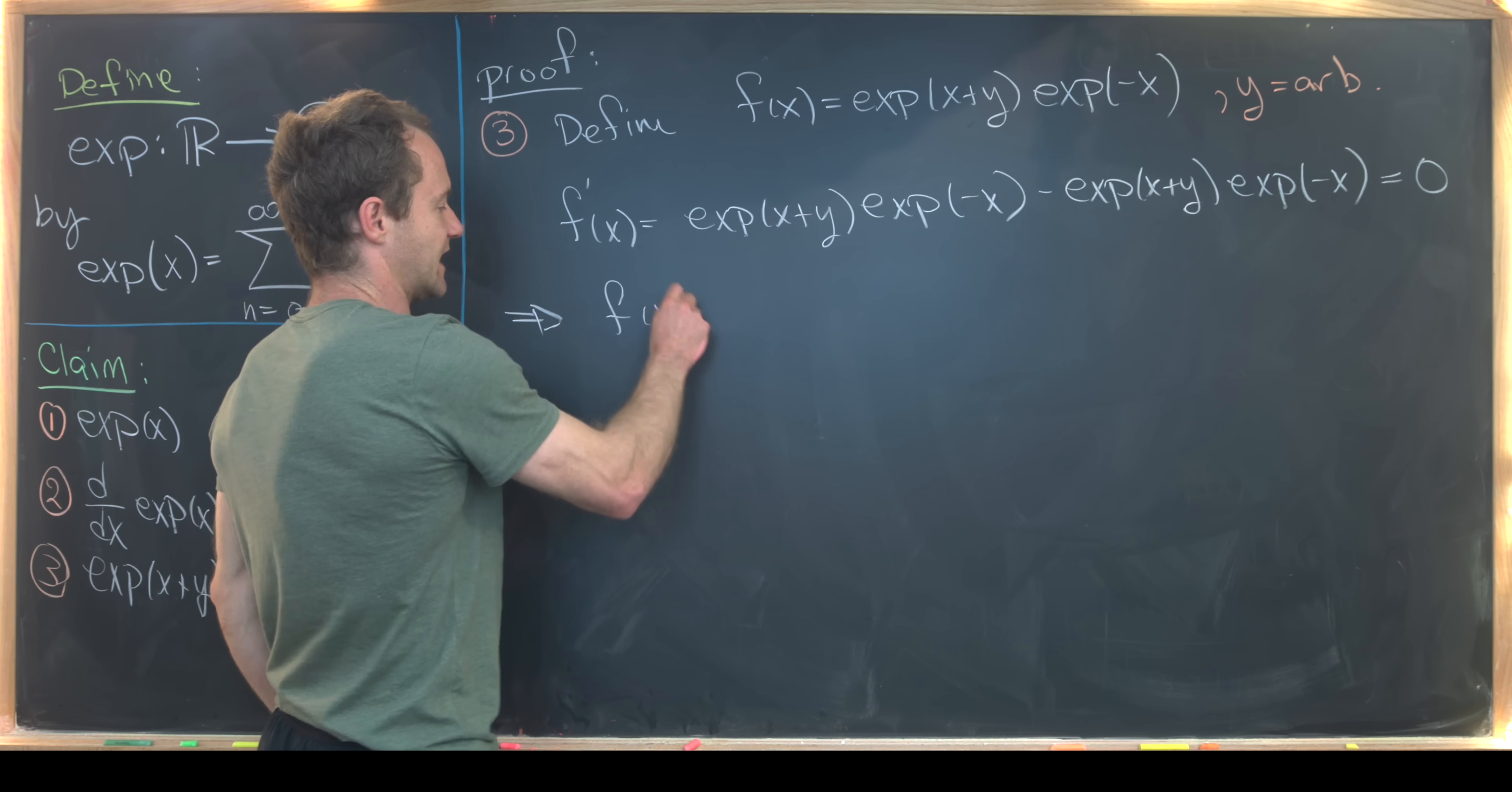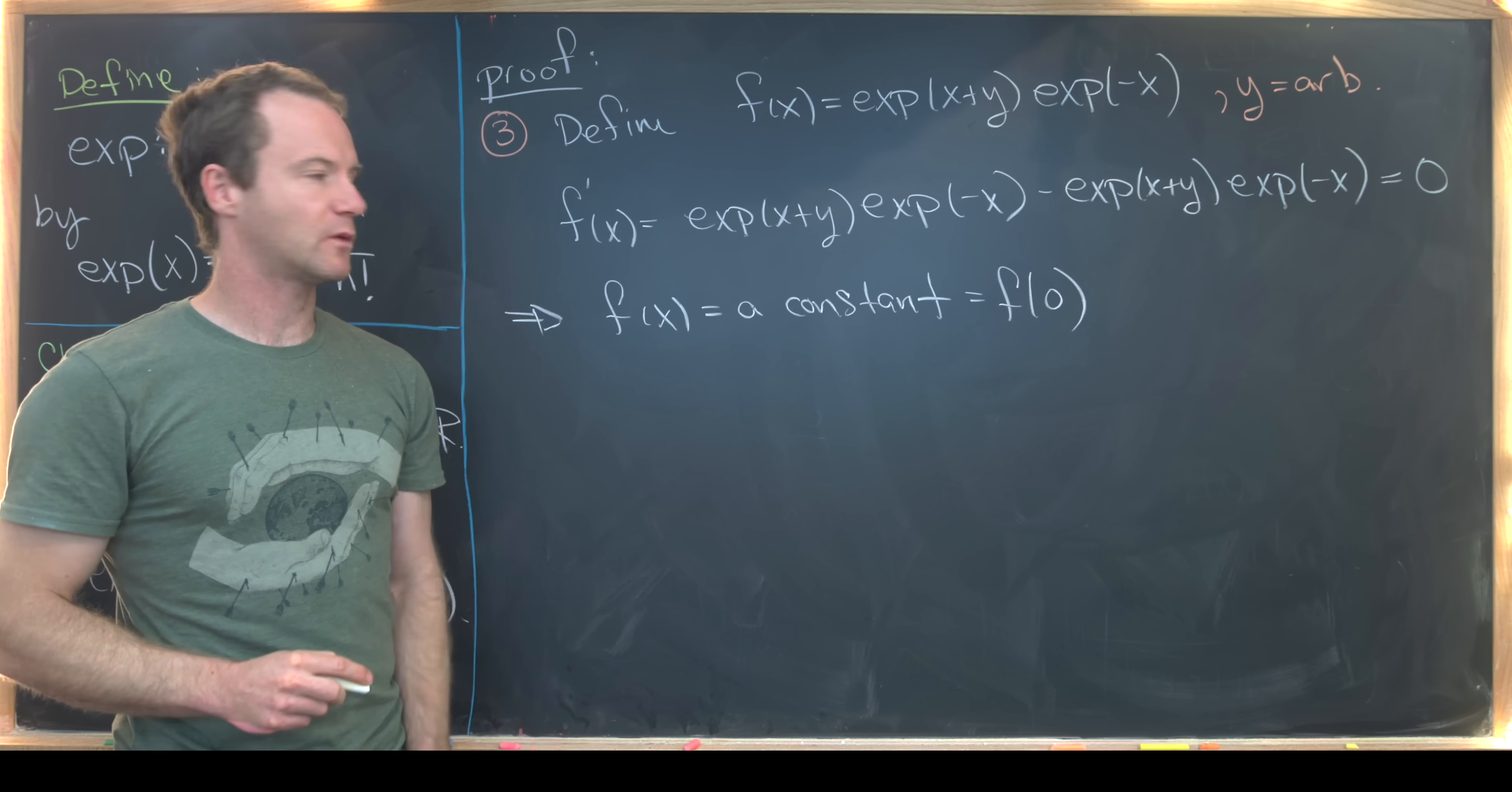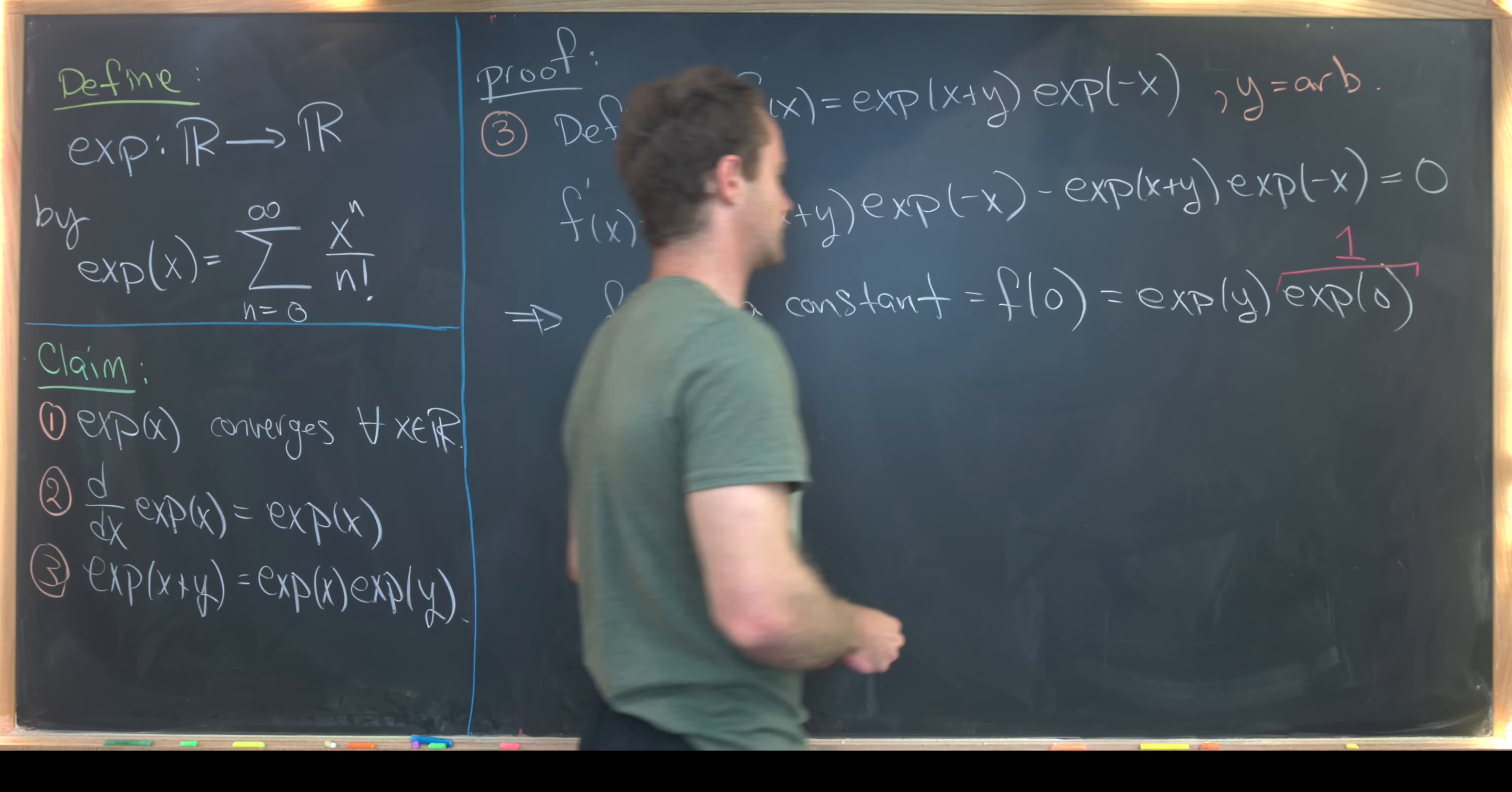But that means f(x) is equal to some sort of constant. So I'll just say that it's equal to a constant. But notice that its domain is all real numbers. So it's really just equal to this function evaluated anywhere we want. So it might as well be the constant f(0). Let's see what we get when we do that. So if we plug in zero to our original function, we'll get exp(y) and then exp(0). But it's pretty easy to see that exp(0) given this definition via a series is just equal to one. So we'll replace this with one.